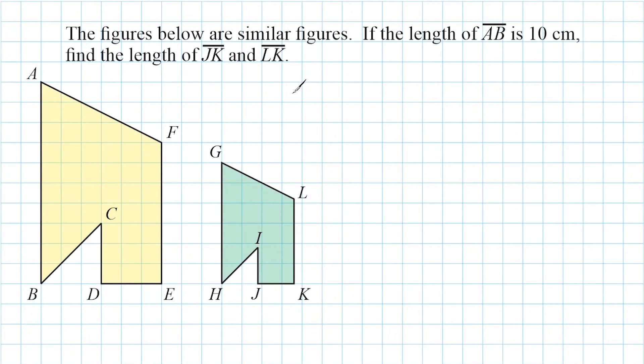So this problem reads that the figures below are similar figures. If the length of AB is 10 centimeters, find the length of line segments JK and LK. So what we're going to do is we are going to label line segment AB right here 10 centimeters because we know by the information given in the problem.